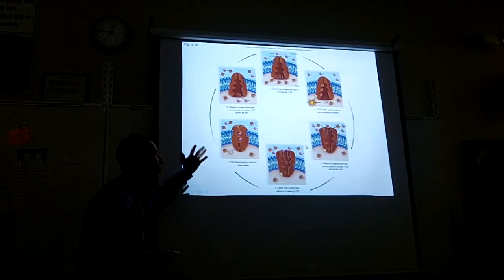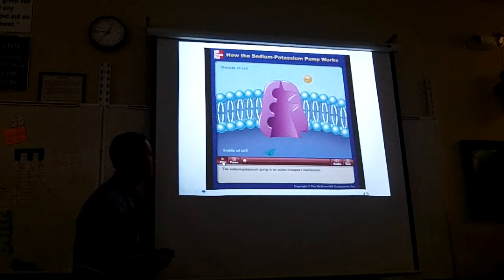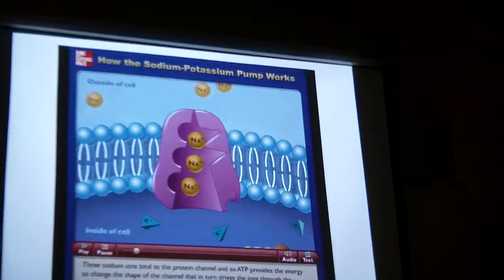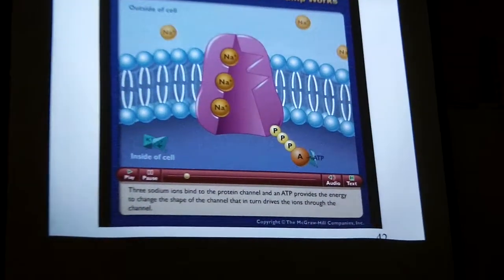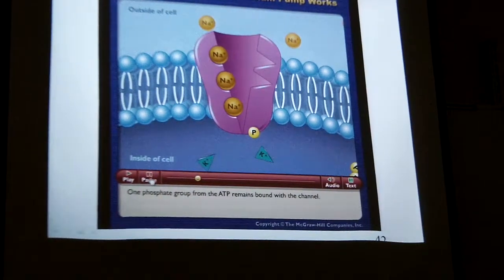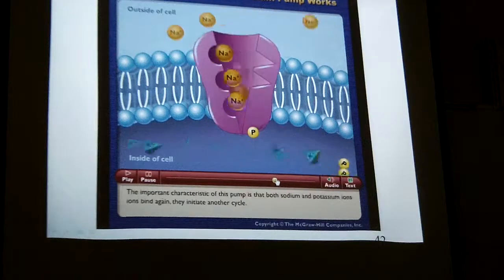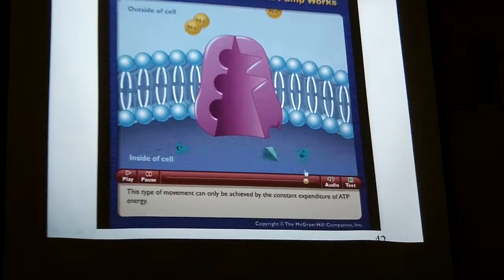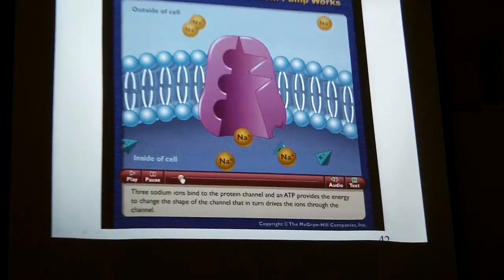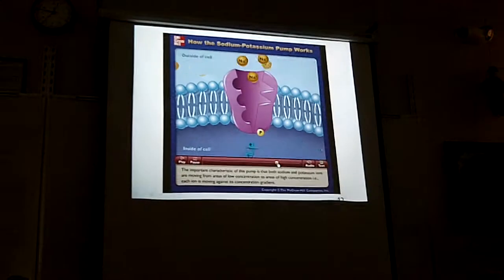This is a special kind of active transport called the sodium-potassium pump, which we'll learn about later in second semester. Three sodium ions bind to the protein channel, and ATP provides the energy to change the shape of the channel, which drives the ions through. You can see sodium ions come up and are released, and potassium ions come in and are released. The cell doesn't need sodium, but it needs potassium. This kind of movement requires energy — we call it active transport.